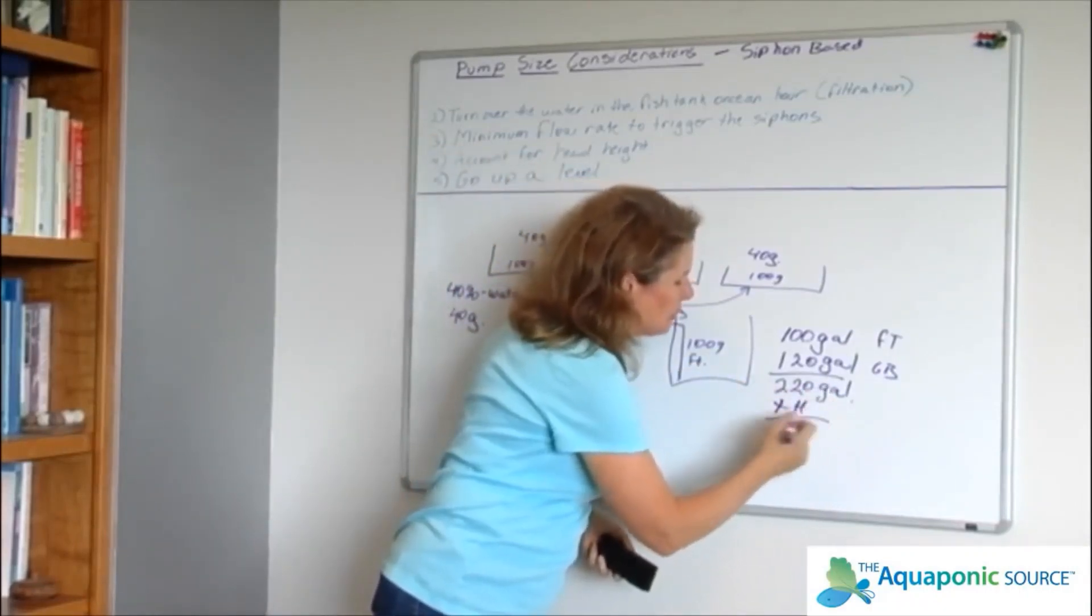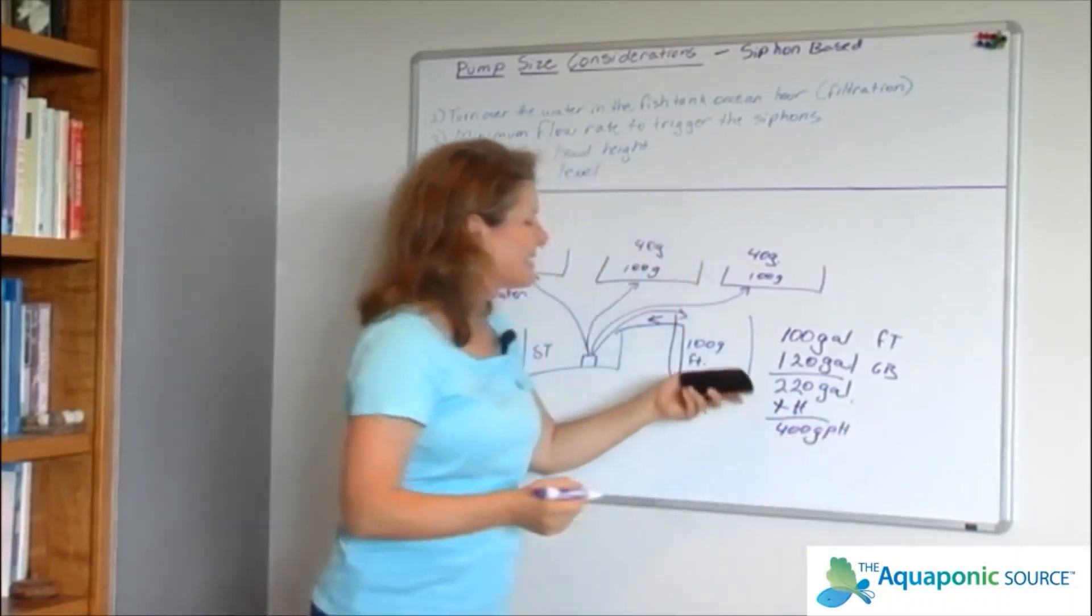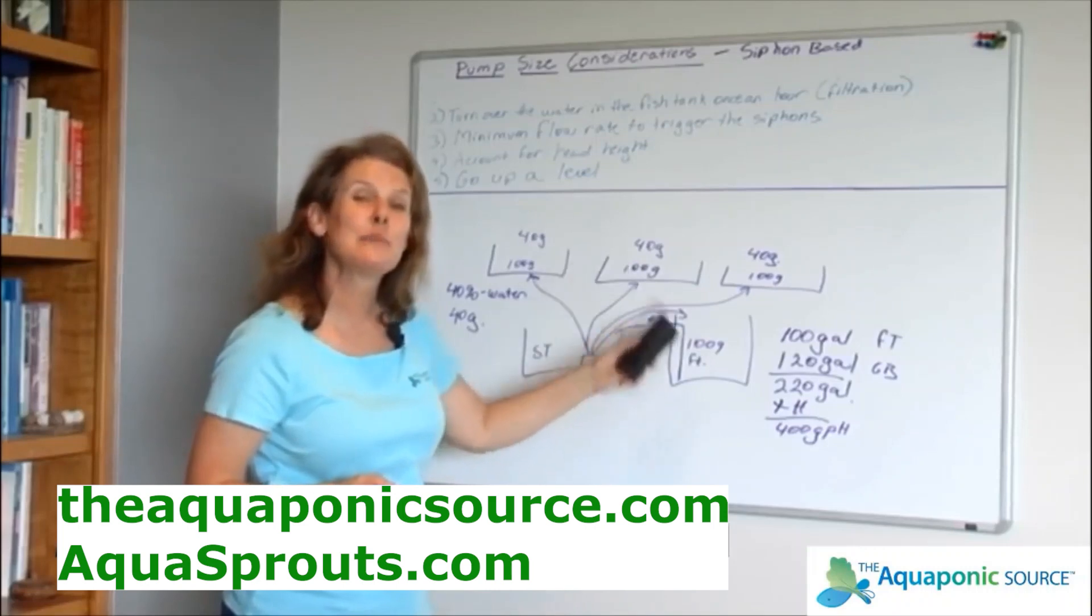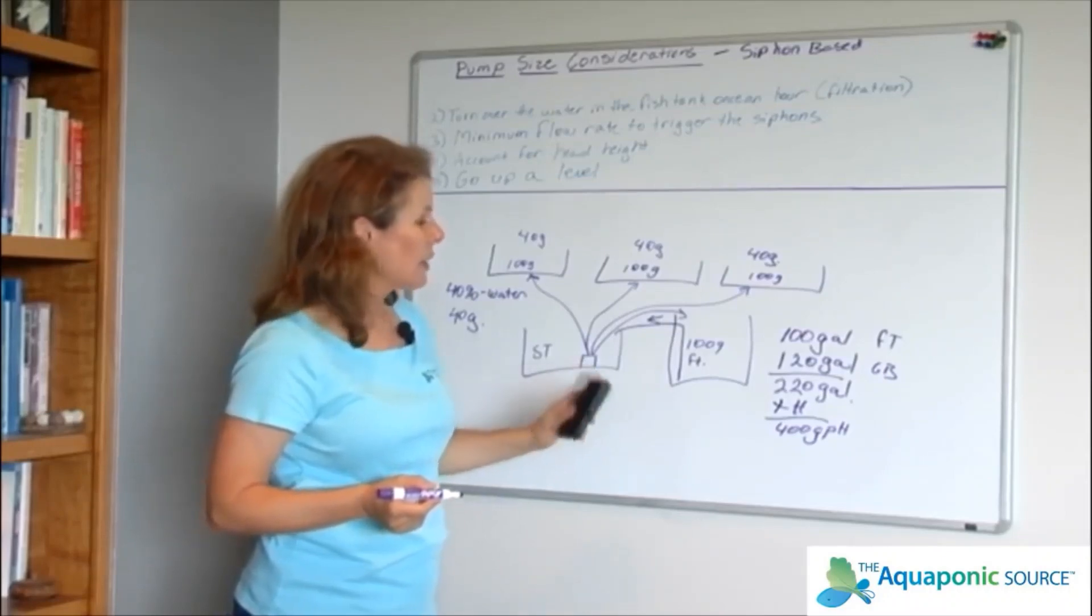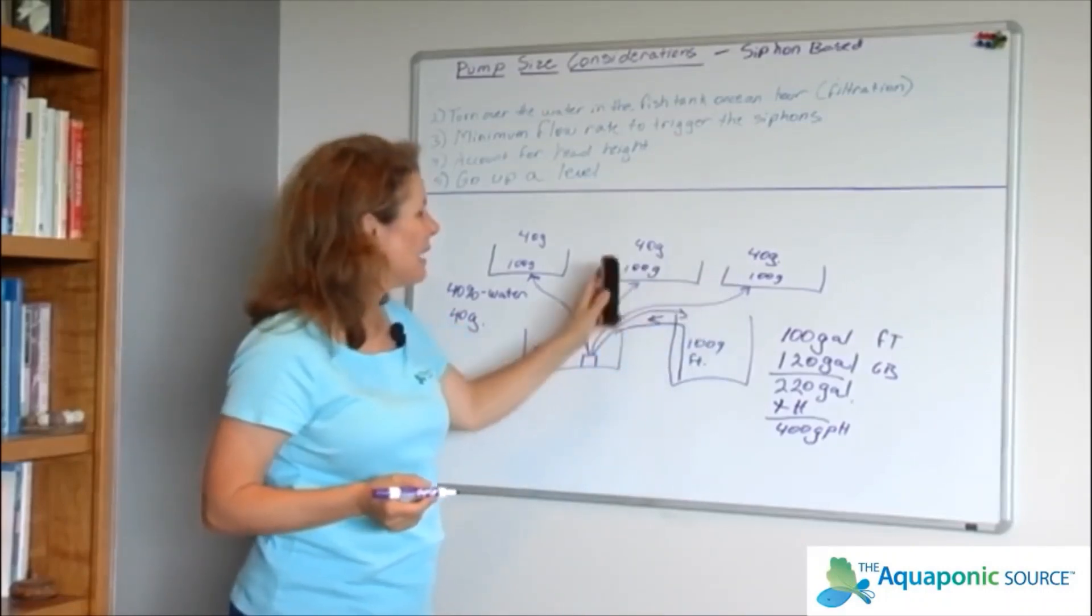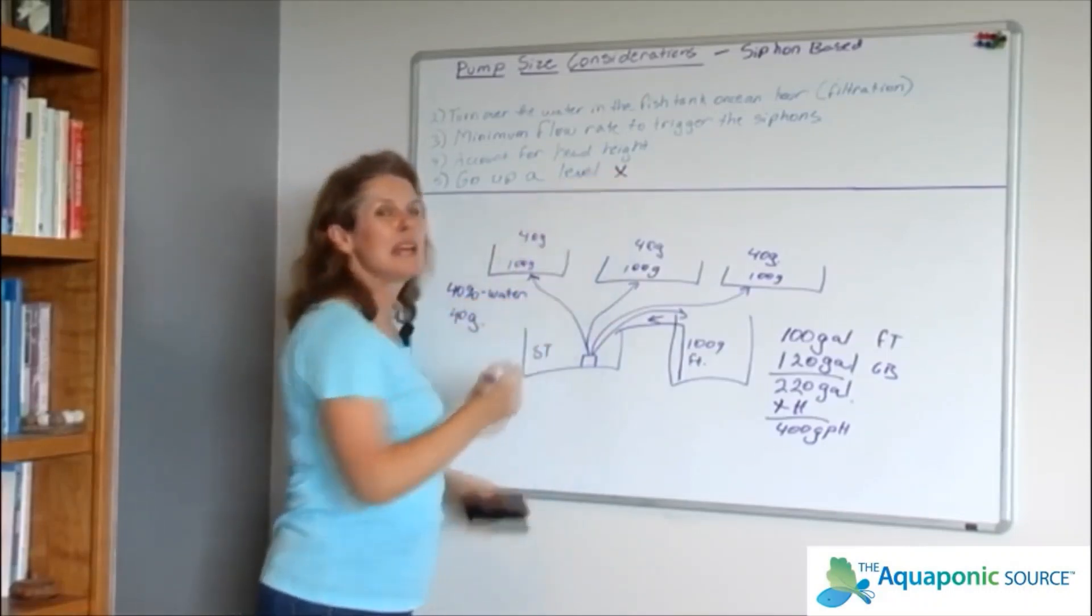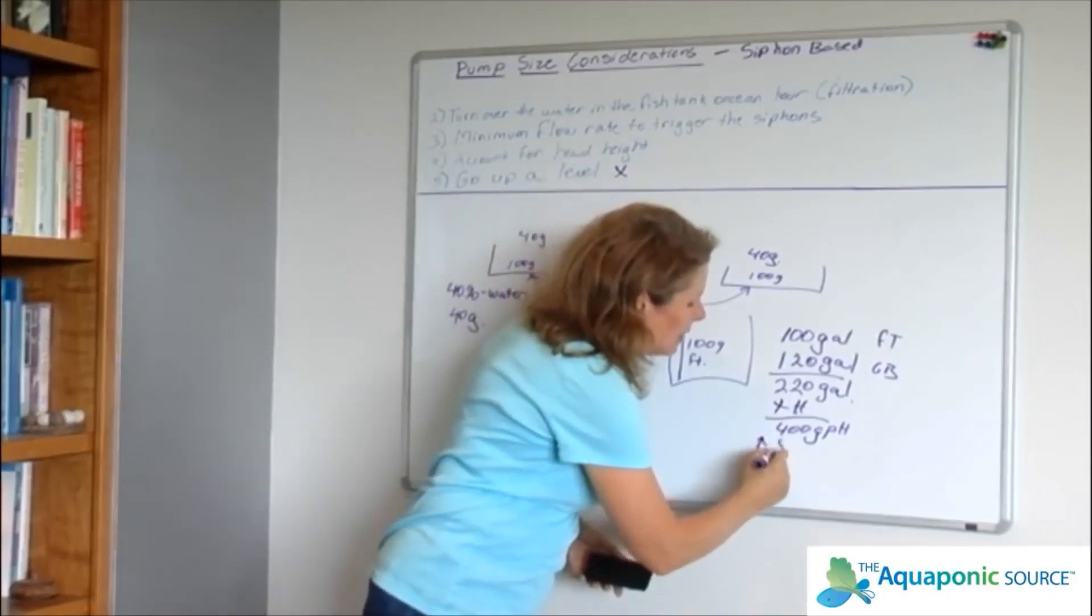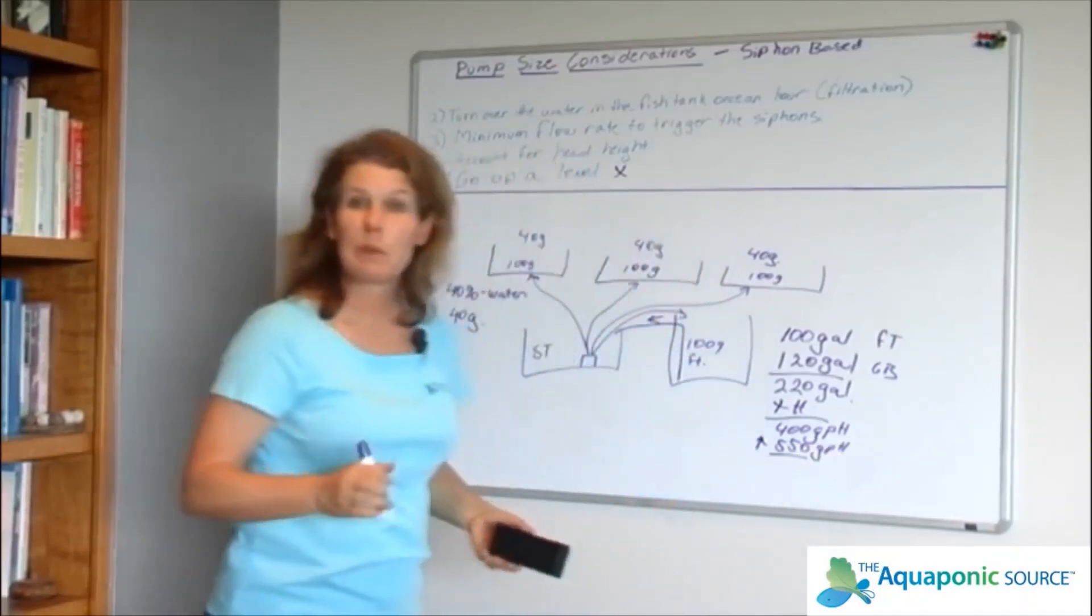And by the way, notice how much less this is than on the timer based system. The reason is because this pump is working continuously. I don't have just 15 minutes to do this, I have a full hour. I'm just at 400 gallons per hour. I guarantee you that's not going to be enough to trigger the siphon in these grow beds. What I want you to do is now take it up a level. So I've got 400 gallons per hour, go up to the next level, perhaps a 550 gallon per hour pump, and you're going to be good to go.